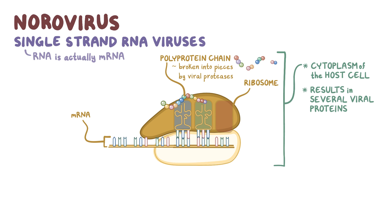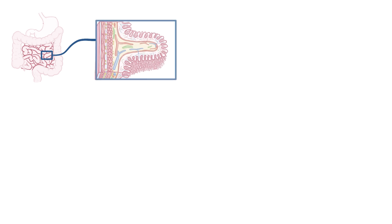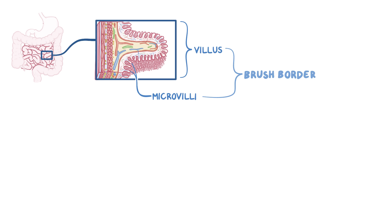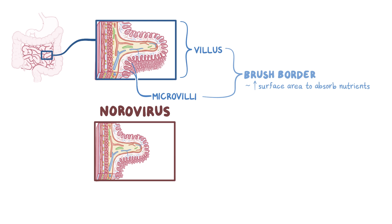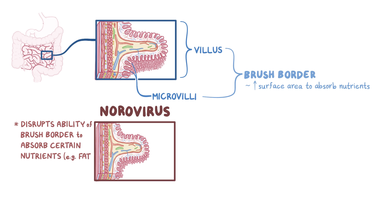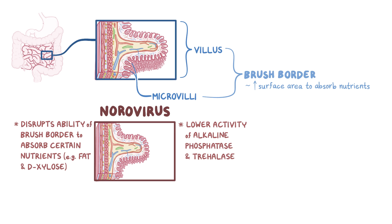The exact role of each specific viral protein is still a bit of a mystery, but we do know that they mainly affect the small intestine. The small intestine has lots of tiny ridges and grooves, each of which projects little finger-like fibers called villi, and in turn, each villus is covered in tiny microvilli — this is called the brush border. Norovirus blunts the villi and shortens microvilli, disrupting the brush border's ability to absorb certain nutrients, specifically fat and a simple sugar called D-xylose. It also lowers the activity of alkaline phosphatase and trehalase, which are digestive enzymes produced by brush border cells.